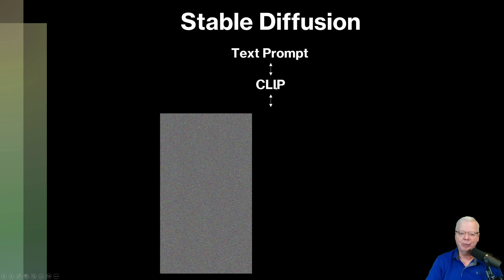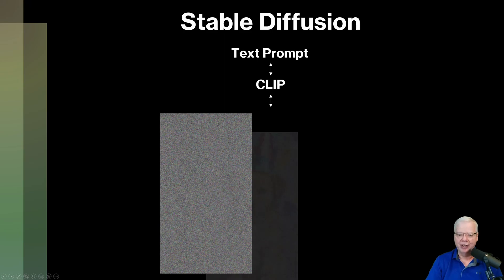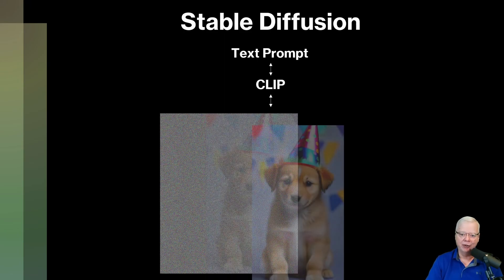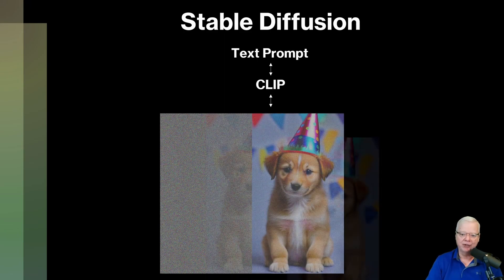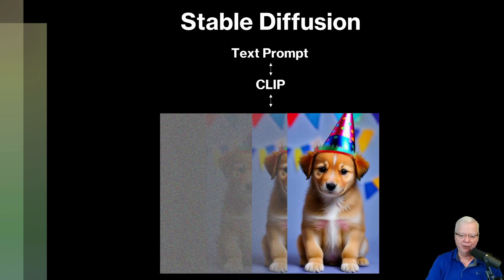This round trip happens a lot between CLIP, your text prompt, and the images. CLIP is constantly checking on the text prompt to make sure it's getting things right, and checking on the image to make sure the image is getting things right. And slowly but surely, your image starts to come out of the noise, and when you're done, you have a cute picture of a puppy with a party hat on.